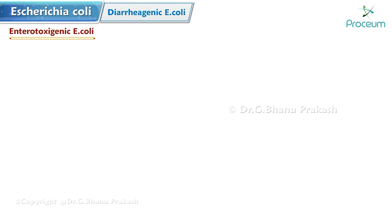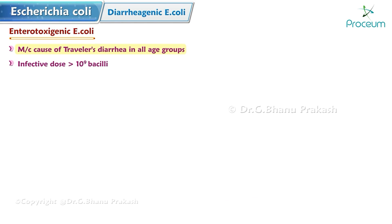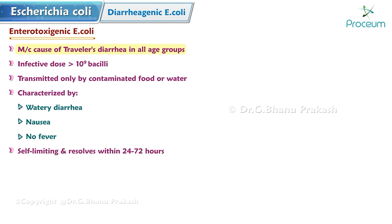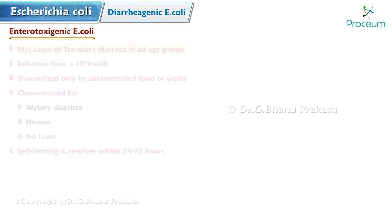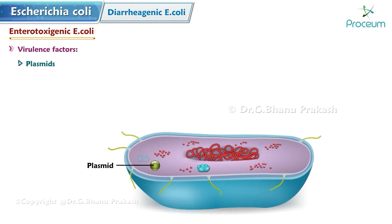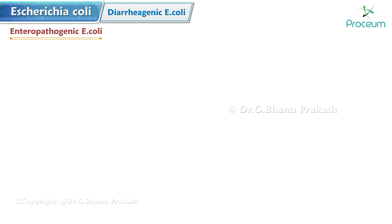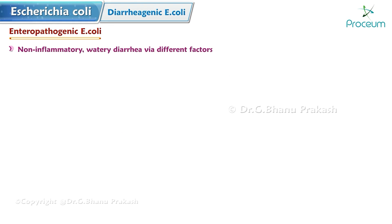Enterotoxigenic E. coli (ETEC) is the most common cause of traveler's diarrhea in all age groups. Its infective dose is greater than 10 to the 9th power and is transmitted only by contaminated food or water. Traveler's diarrhea is characterized by watery diarrhea and possible nausea but usually no fever. The disease is self-limiting and resolves within around 24 to 72 hours. Virulence is due to virulence plasmids and colonization factor antigens present on fimbriae outer membrane, mediating adhesion — for example, CFA1, CFA3, CS1, CS2.